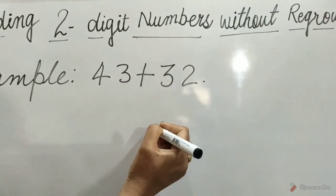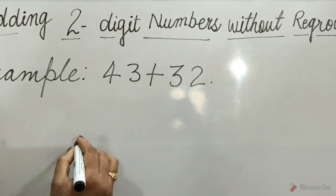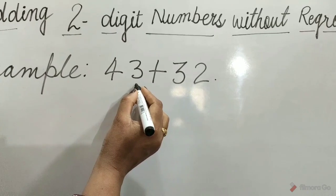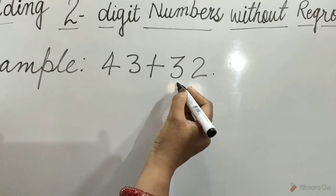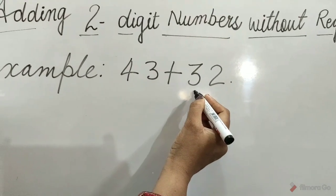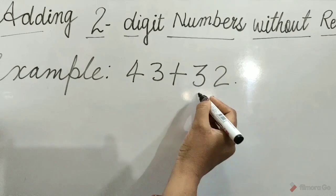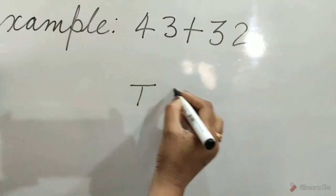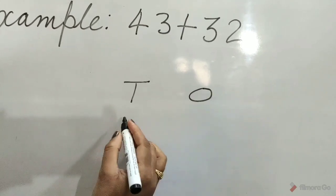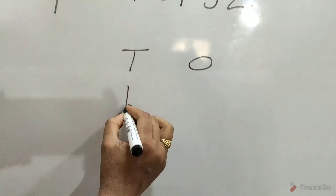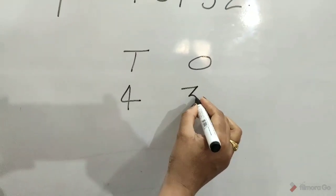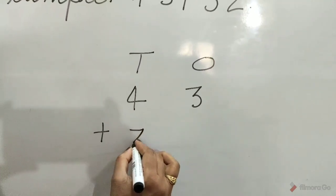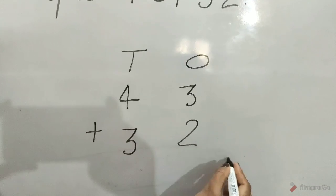4 tens, 3 ones is equal to 43. 3 tens, 2 ones is equal to 32. So, write here tens and ones: 4 tens, 3 ones plus 3 tens, 2 ones.